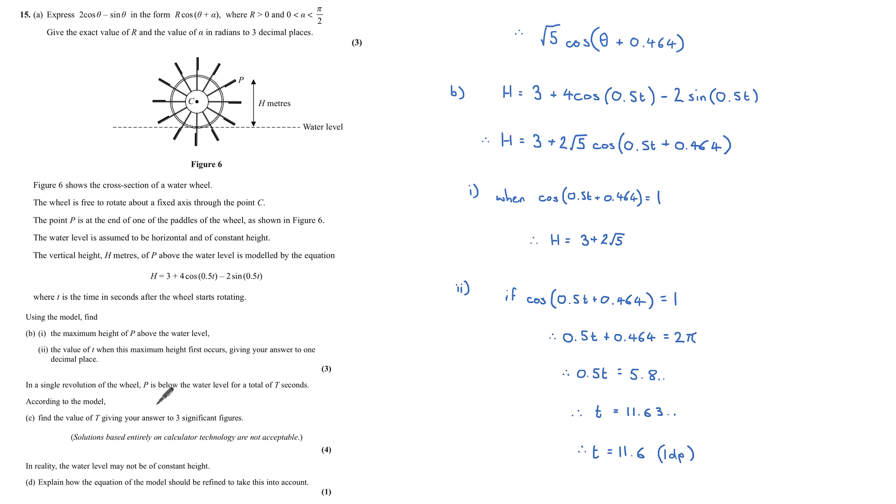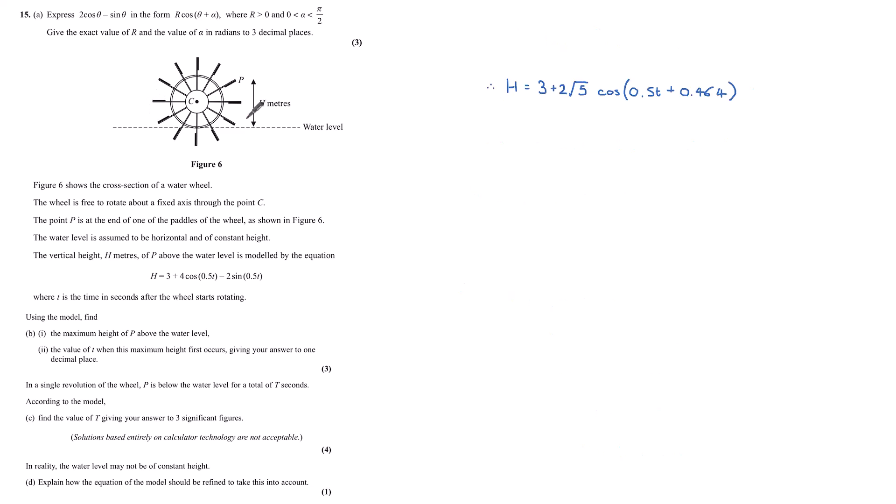In a single revolution of the wheel, P is below the water level for a total of T seconds. According to the model, part C: find the value of this capital T giving our answer to three significant figures. Solutions based entirely on calculator technology are not acceptable. So we're looking at this wheel - it's going to go below water level for some period of time and then come out as it turns. We know at water level that h is 0. So we want to consider what times this wheel goes under the water and then when it comes back out. So let h equal 0.